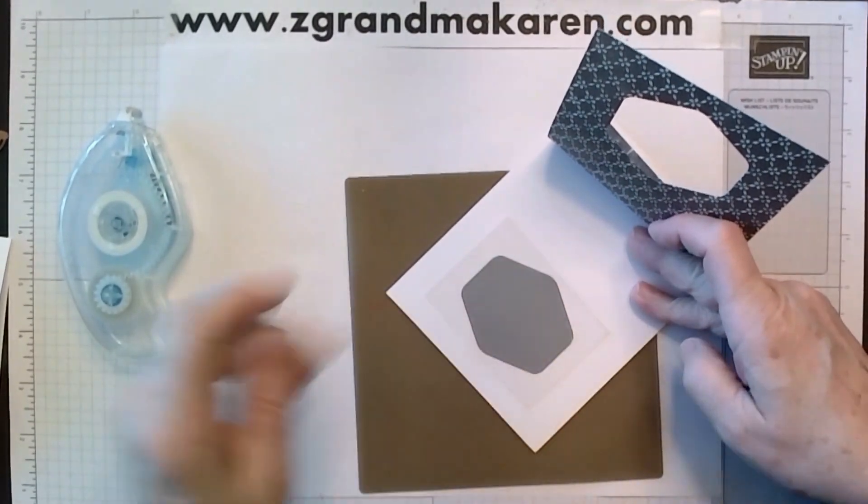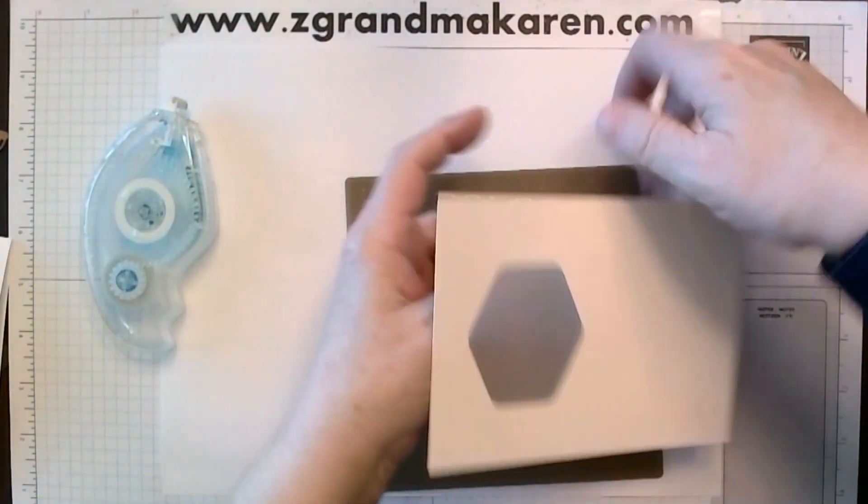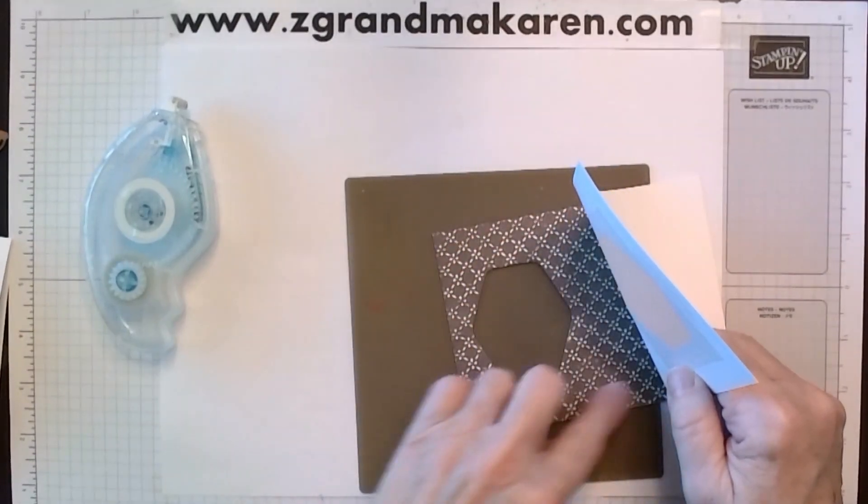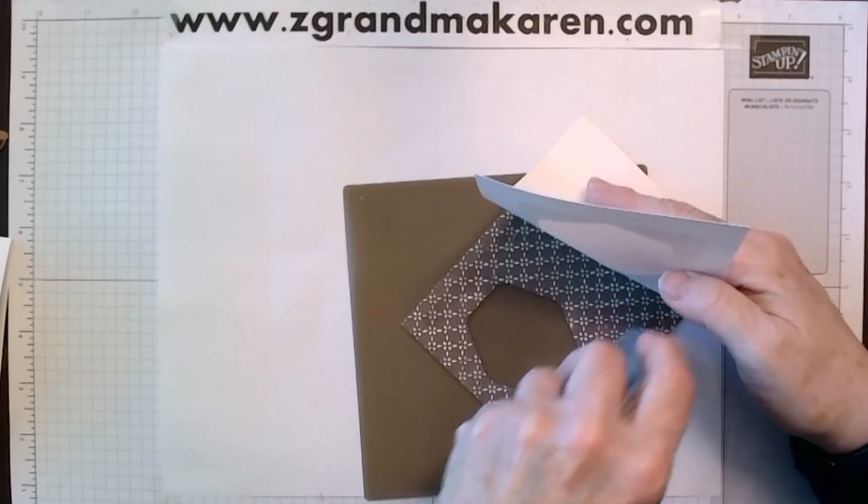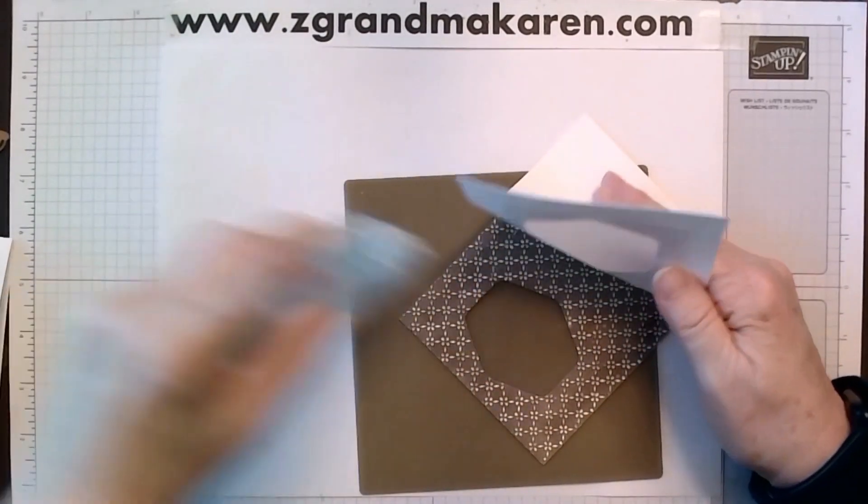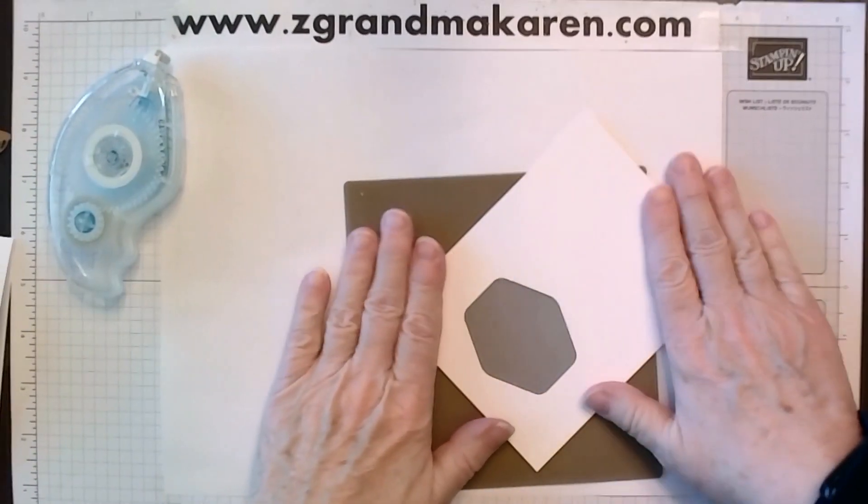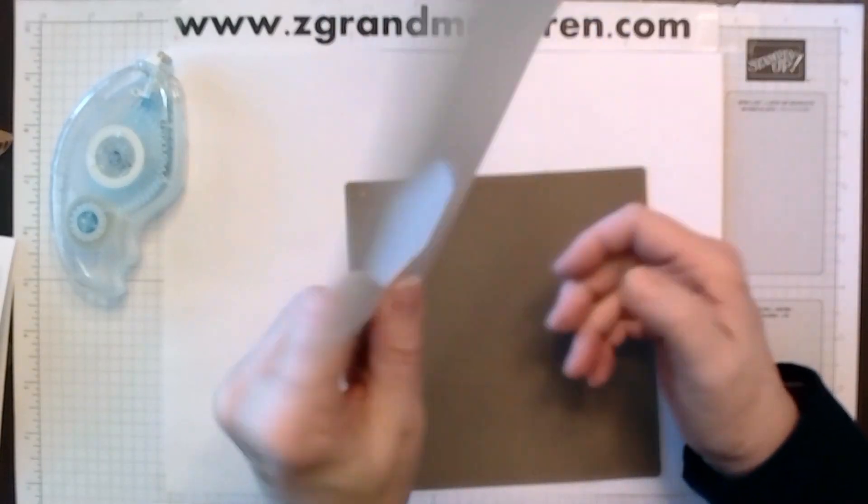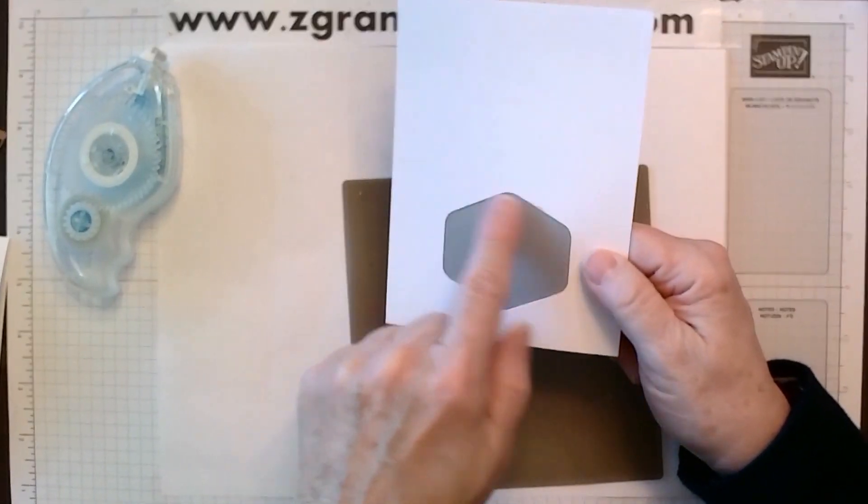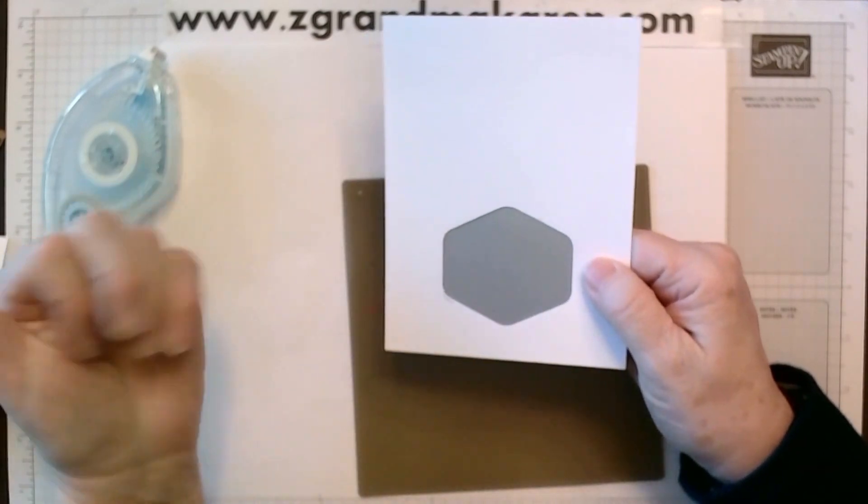And now we will turn it this way and put adhesive on the back of the designer paper. And I'll show you why we did that. Now we have a nice finished edge here. And when they open it up, this edge is finished as well. And it's just an easy way to do it.